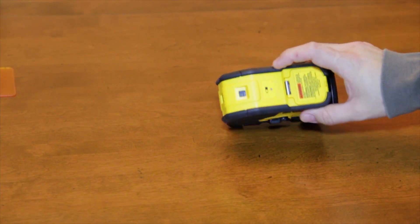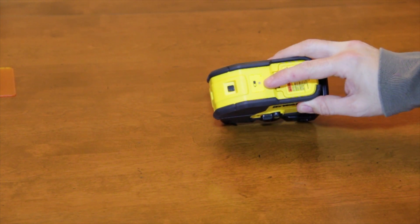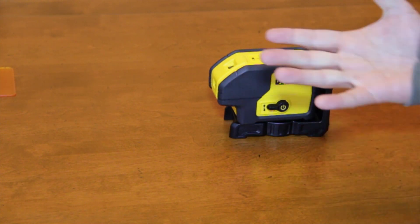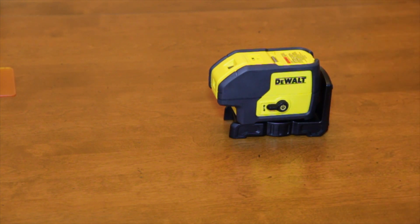by four double-A batteries, has a battery indicator level light right here, pendulum lock. So if it's being transported, it does come in a nice little case, but as it's being transported the whole unit is locked to avoid damage